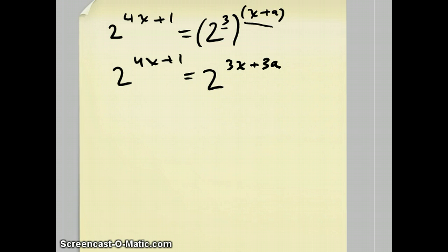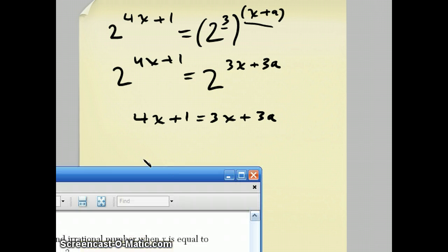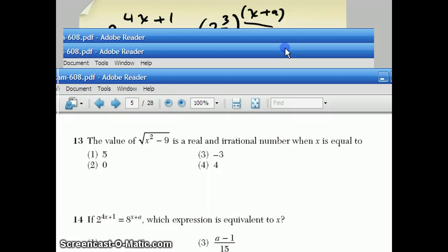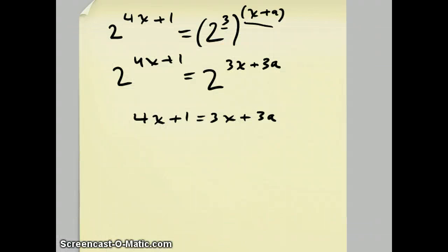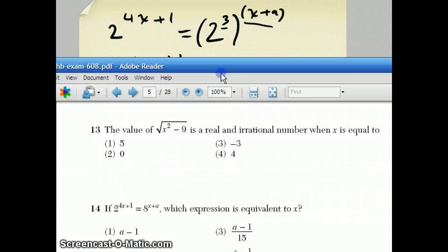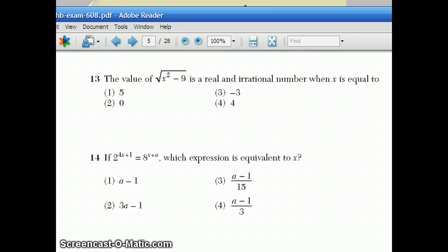Now that the bases are the same, I can just find out for what values are the exponents equal to each other. And in this question, they wanted to know, they wanted you to solve for x. So, I'll subtract 3x from both sides. To get the answer, x equals 3a minus 1, which was choice number 2. And that's question 14.